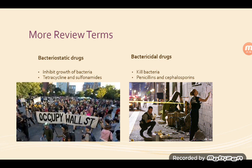Bacteriostatic drugs inhibit the growth of bacteria — things like tetracycline and sulfonamides. Bacteriocidal drugs kill bacteria, so we have penicillins and cephalosporins.